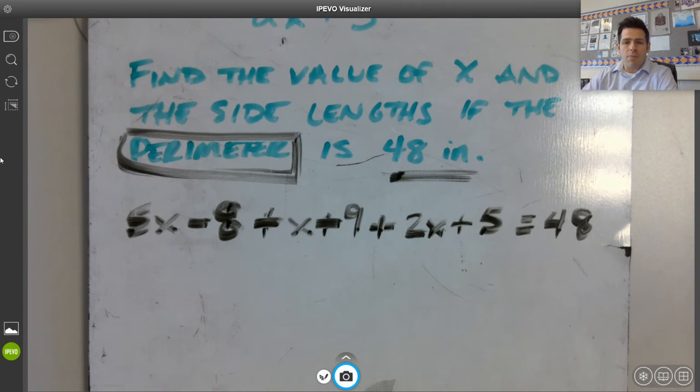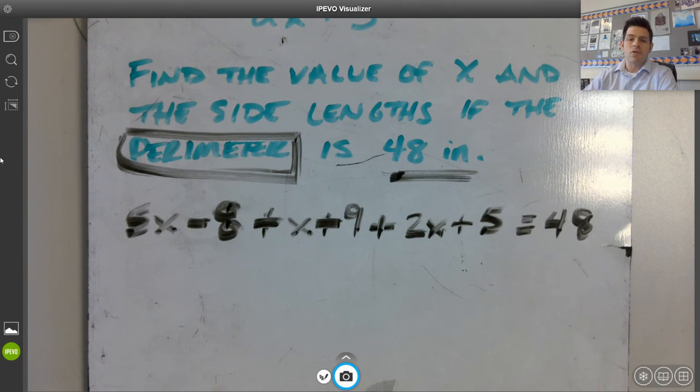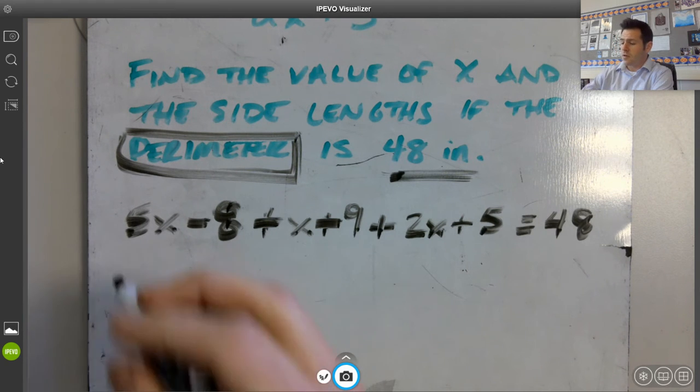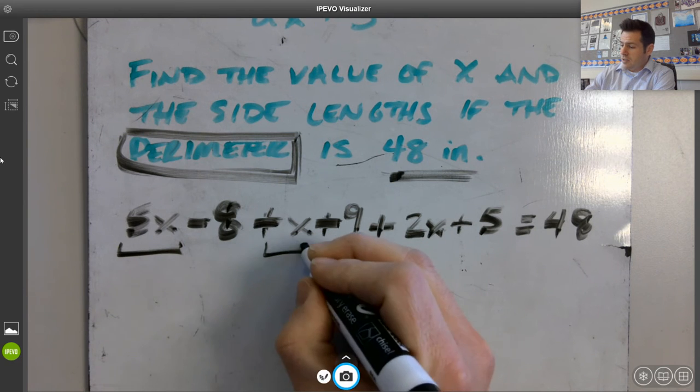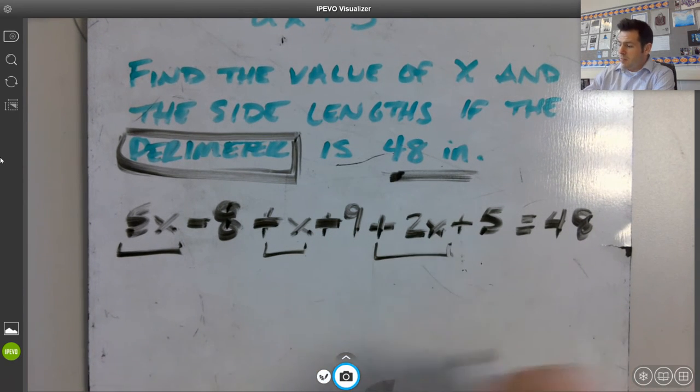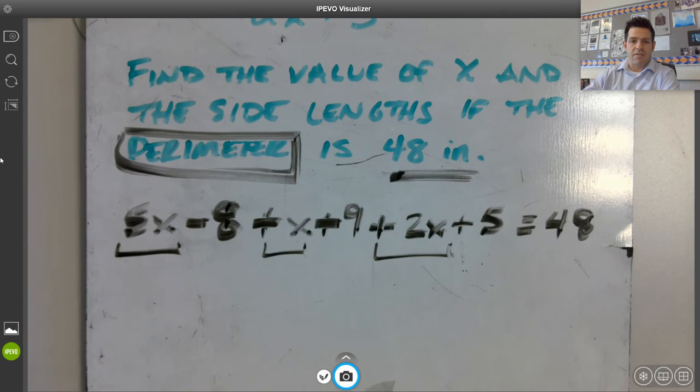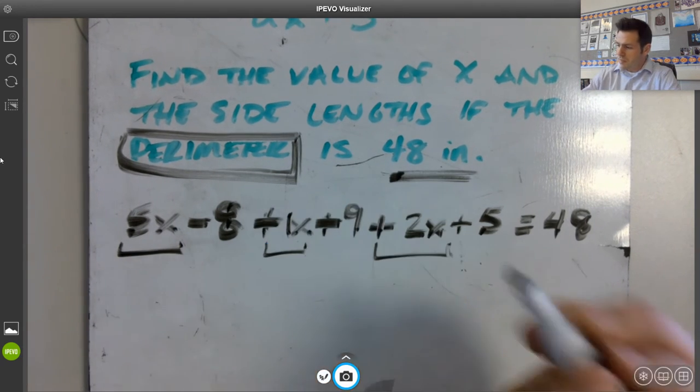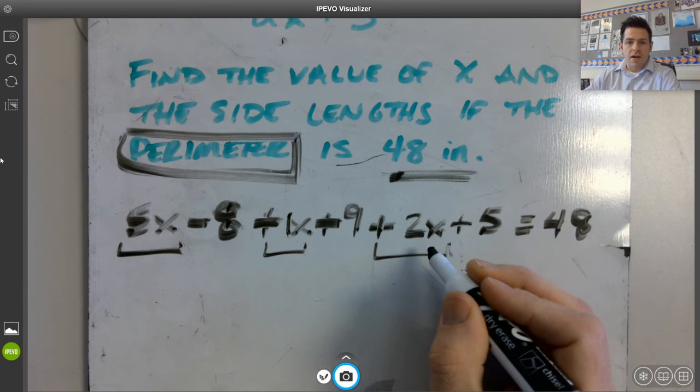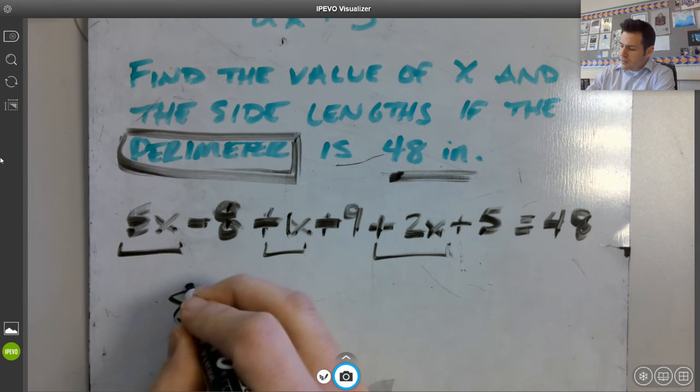So, we definitely have a problem here, an application problem, where we have to combine like terms. Obviously, on the left side here. I want to go ahead and take a look at the terms, the variables in them first. I got a 5x, a positive x, and a positive 2x. So, if I take 5 plus the understood 1 right here, plus the 2, 5, 1, and 2 would make 8x.